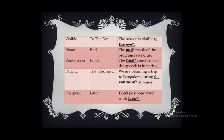'End result' — result itself is the end of something, so using 'end' again makes it superfluous. The correct form is: 'The result of the program is failure.' 'Final conclusion' — final means last part or conclusion, so using both is superfluous. The correct form is: 'The conclusion of the speech is inspiring.'